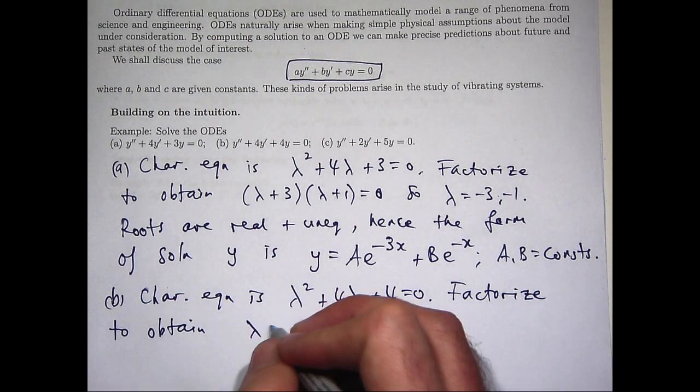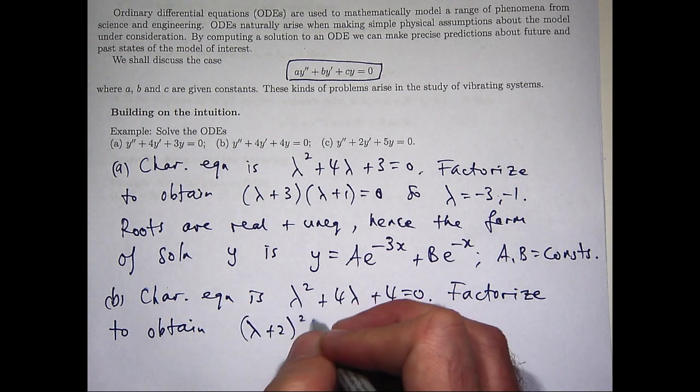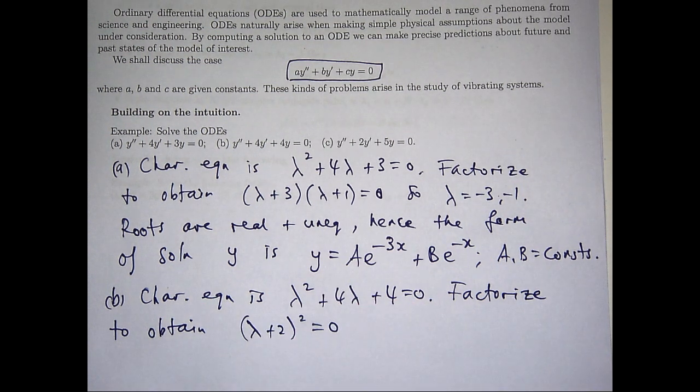So I can factorize that again. Now it's going to be something like lambda plus 2 all squared. So in this case, lambda equals minus 2 or minus 2, so there's a repeated root.